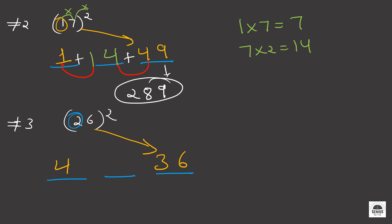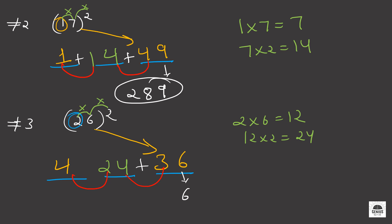Now for the middle blank, we multiply these two numbers and then multiply by 2. So 2 into 6 is equal to 12, and 12 into 2 is equal to 24. So we will write down 24 here. Now for the final step, we just add these two numbers and these two numbers. Our final answer: this number is 6, then 4 plus 3 is equal to 7, and 4 plus 2 is equal to 6. So the square of 26 is equal to 676.